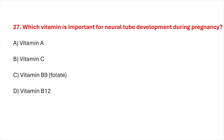Question number 27. Which vitamin is important for neural tube development during pregnancy? Correct answer is option C: Vitamin B9.